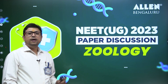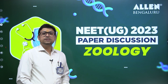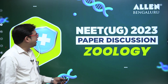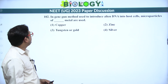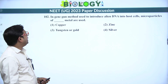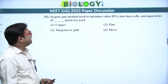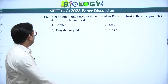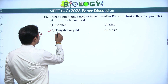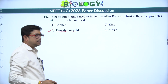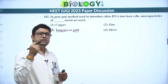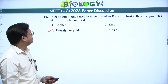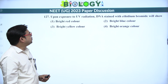Hello students, today I am going to discuss the zoology questions of NEET 2023, paper code E2. First question, number 102: in the gene gun method used to introduce alien DNA into host cells, micro particles of which metals are used? We know inert metals — tungsten and gold particles — are coated with the desired DNA and bombarded onto the target cells. So the answer is the third option.